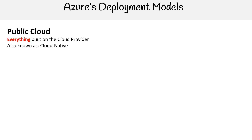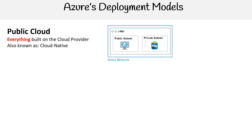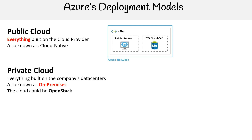Generally this is known as cloud native, but for some reason Azure calls it the public cloud, so that's what we're going to use in the terminology here. I have an architectural diagram — we have a network on Azure, and within that network we have a virtual machine running and a database running. That would be an example of public cloud.